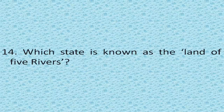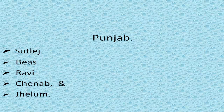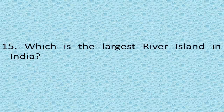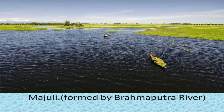Which state is known as the land of five rivers? Punjab. The five rivers of Punjab are Sutlej, Beas, Ravi, Chenab and Jhelum. Which is the largest river island in India? Majuli Island, formed by the Brahmaputra River, Assam.